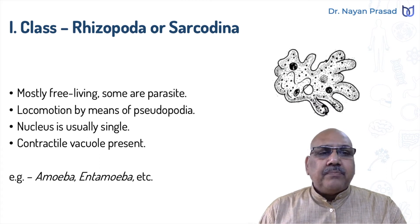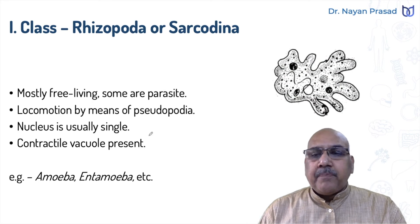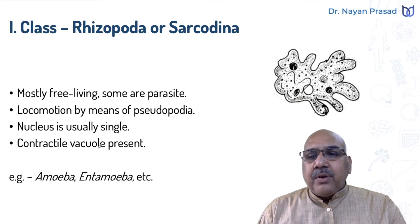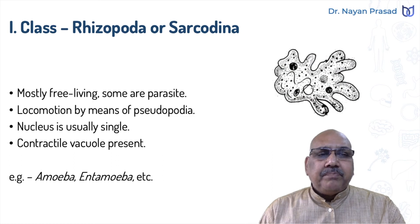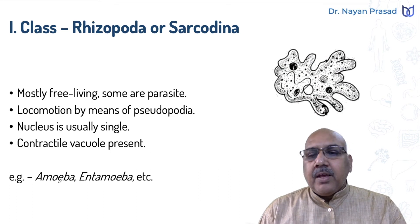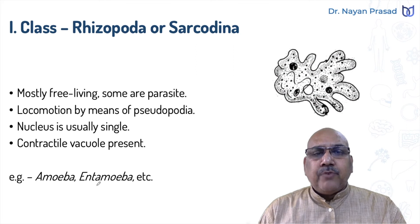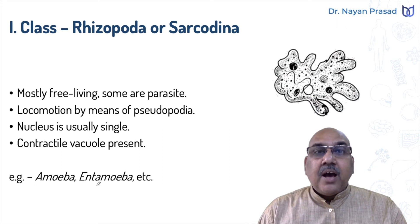Nucleus is usually single. In amoeba, we see a single nucleus and several pseudopodia, so amoeba is a member of phylum Protozoa, class Rhizopoda. Contractile vacuole is usually present in them; contractile vacuoles are found absent in parasitic forms only. Examples are Amoeba (free-living) and Entamoeba (parasitic in nature) — it is an endoparasite that causes amoebic dysentery.